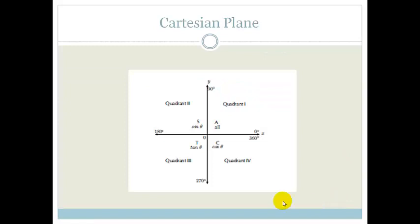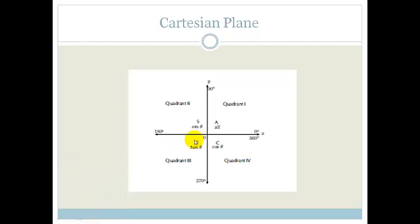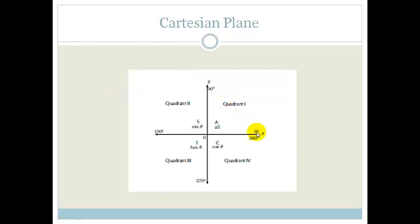What we have here is a Cartesian plane, which looks slightly different from the Cartesian plane you're used to. Usually, you have an x and a y-axis, which we still have. Now, if you do geography, you would have 0, 90, 180, and 270, and back to 360. But since this is a Cartesian plane and we're going to be using this for trig, we've actually got a 0 here.